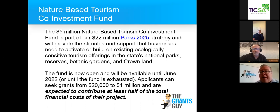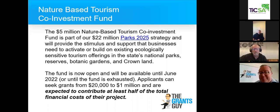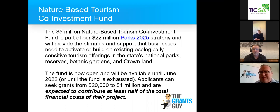Co-investment is very important, so you're going to have to put a co-contribution funding in here. The fund supports businesses to activate or build existing ecologically sensitive tourism offerings across state and national parks, reserves, botanic gardens, and Crown land. The fund is open now until June 2022, or until the fund's exhausted. You can seek grants between $20,000 and $1 million, but you're expected to contribute at least half of the total financial costs of the project. It's not in-kind — it's actual financial contribution.